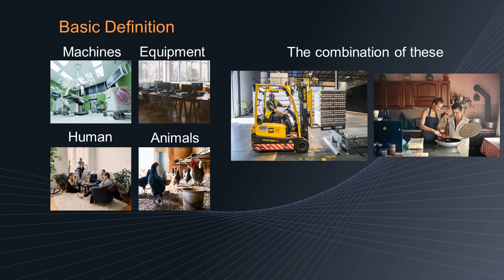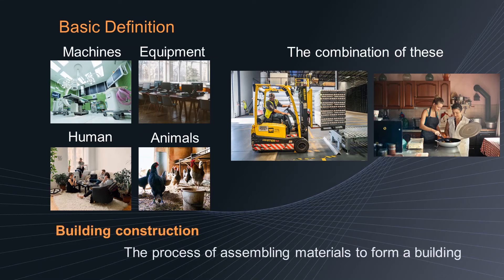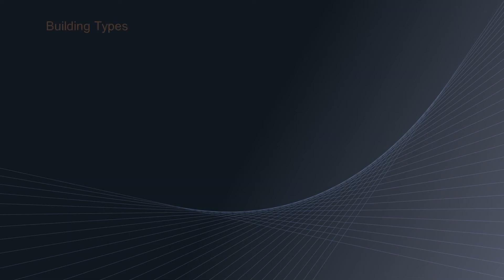So by combining these two terms or concepts, building construction can be defined as the process of assembling materials to form a building. Now let's see the types of buildings. Buildings are mainly classified by the character of occupancy or the type of use. In this regard, there can be at least 10 classifications of buildings.